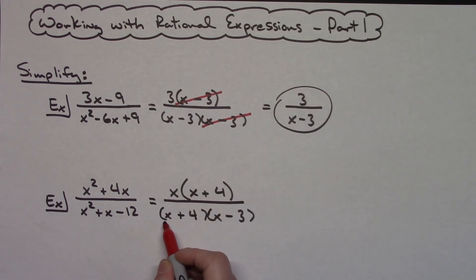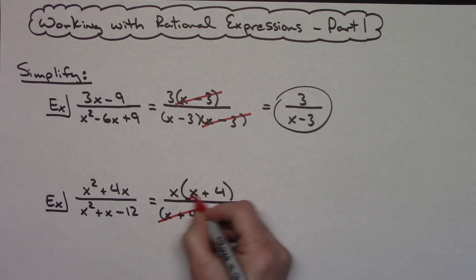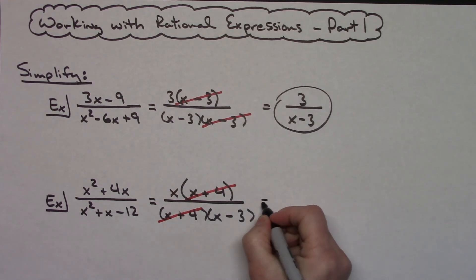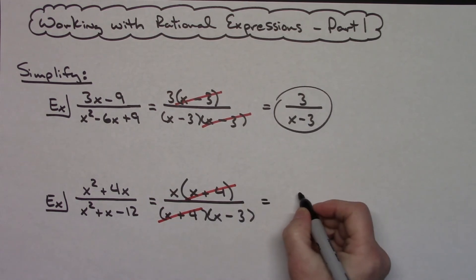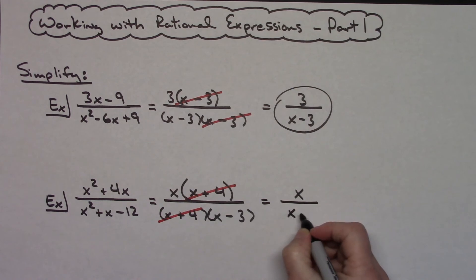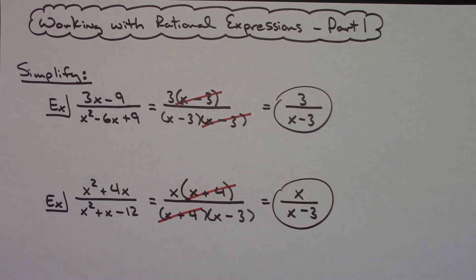I've got (x + 4) in the top and (x + 4) in the bottom, so both of those cross out, leaving me with a simplified rational expression of x over (x − 3).